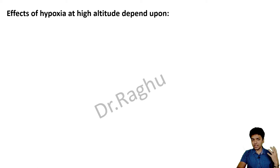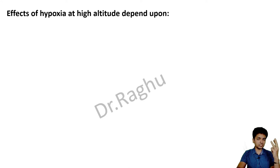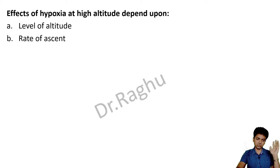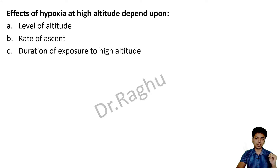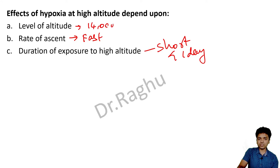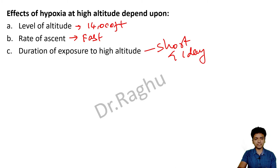The effects of hypoxia developing at higher altitude depend on three important things: the level of altitude — whether the person is at 10,000, 15,000, or 20,000 feet; the rate of ascent — how fast the person has ascended; and the duration of exposure. In this case, the duration is very short, less than one day, the rate of ascent is very fast, and the altitude is 14,000 feet.